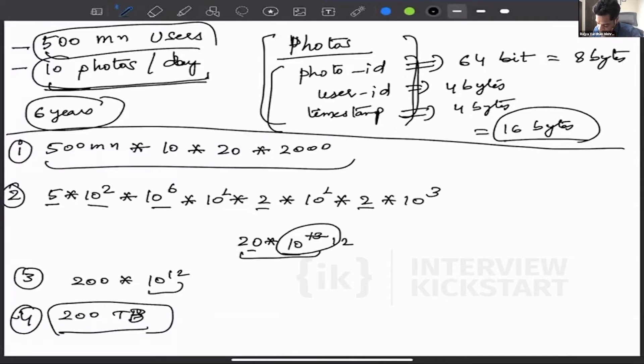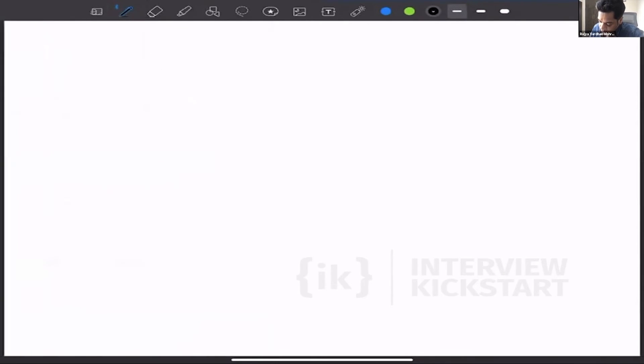If I go back to the previous one where we calculated the disk requirements, we had identified that 200 terabytes are needed to store the metadata. I'll explain this step again. 200 terabytes are needed and we saw that our disk should be running at 70% capacity, so we divide 200 by 70%.